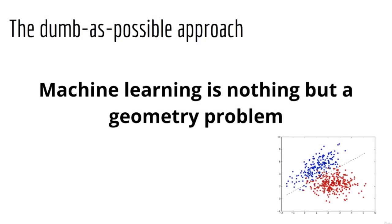So instead, I'm going to teach you my dumb-as-possible approach, which is encapsulated by the motto, machine learning is nothing but a geometry problem. Let's repeat that. Machine learning is nothing but a geometry problem. The best way to illustrate this is by example.